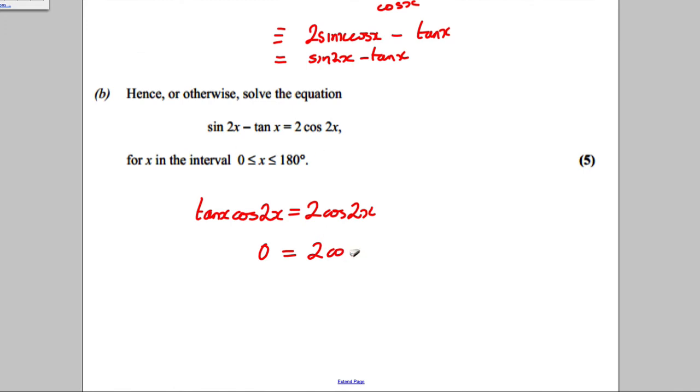Or, actually, the other way around. Subtract 2 cos 2x off both sides. So, what you'd have is tan x cos 2x subtract 2 cos 2x is equal to 0. Factorize out the cos 2x. So, cos 2x and you'd have tan x subtract 2 is 0.